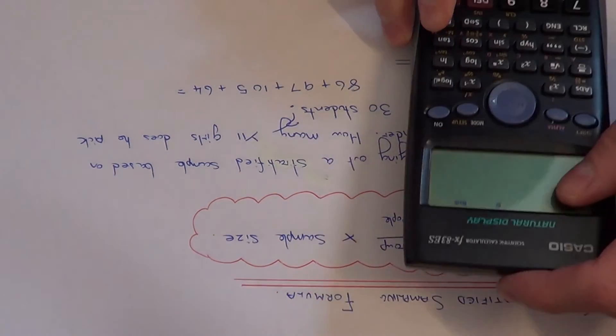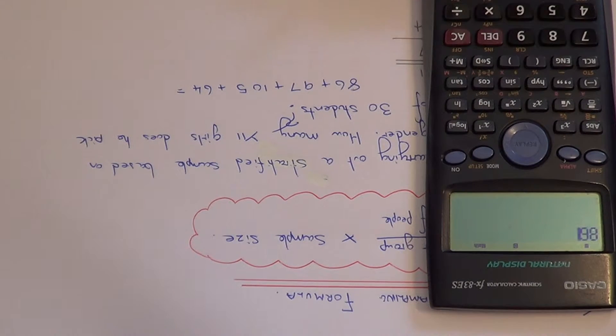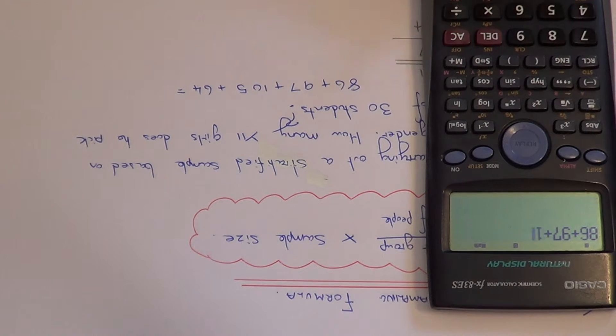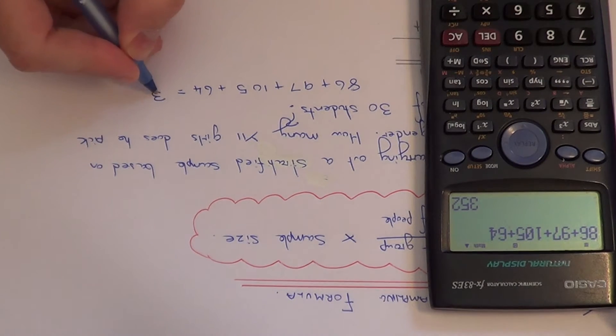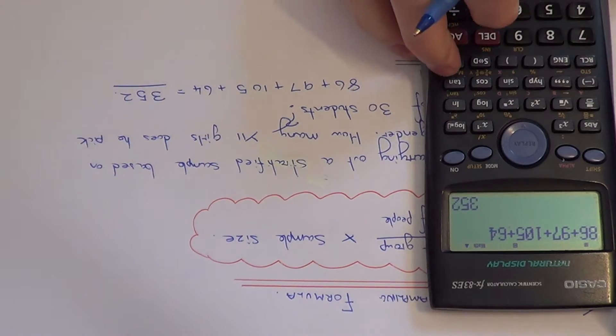So just add this up quickly on your calculator: 86 plus 97 plus 105 plus 64. So all together we have 352 students.